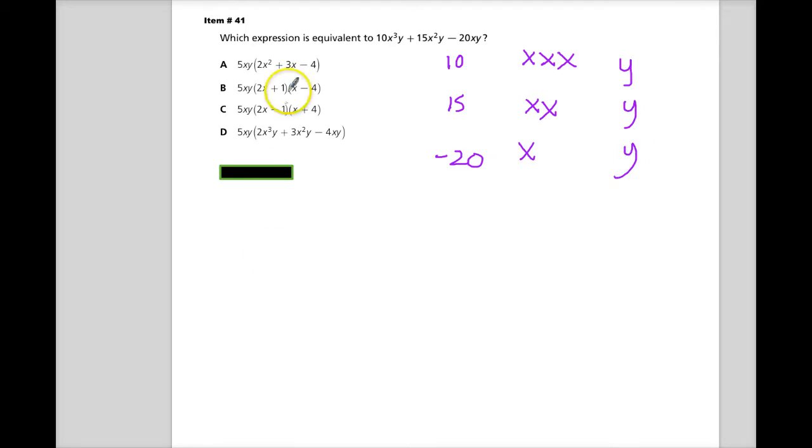For the coefficients, I need to find a common factor, and 5 goes into all of them. I don't know why I wrote 2 there. I'm going to write 3. And this would be negative 4.